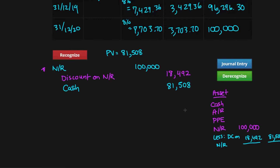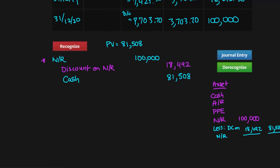Whichever method you use, you'll still have the same accurate carrying value on your books. You can think of this method as similar to the gross method when accounting for sales discounts, while the method we used in the previous video is more like the net method. Now let's look at what's going to change for the journal entry for interest.